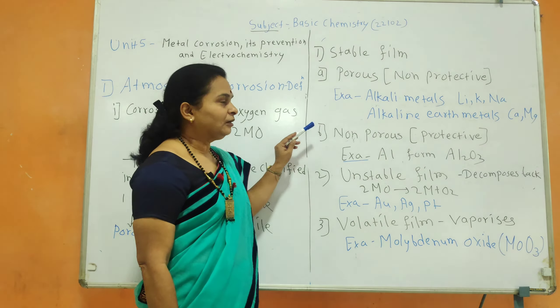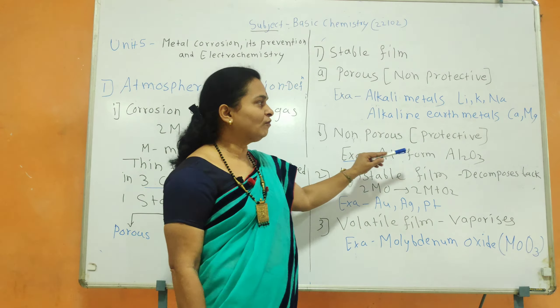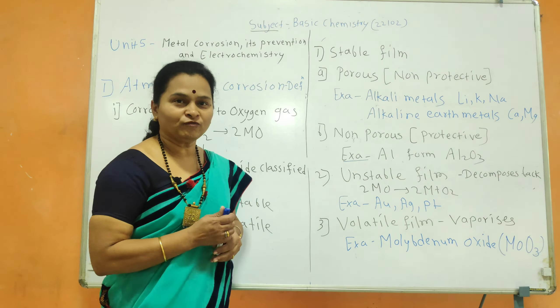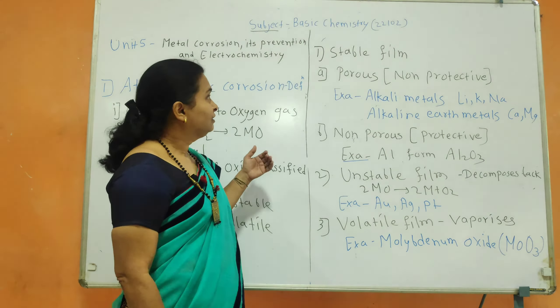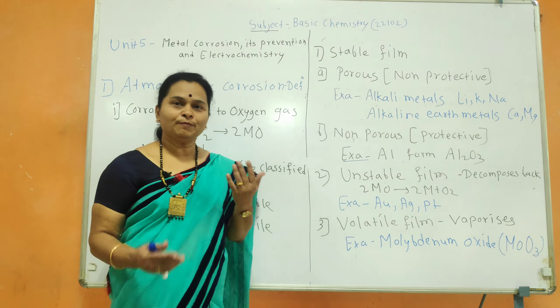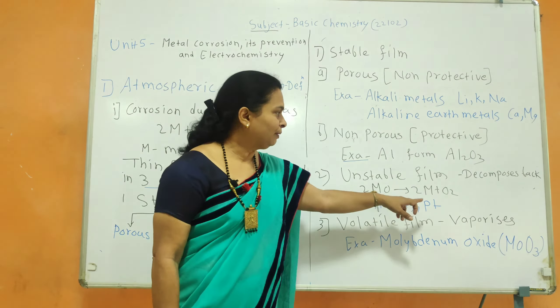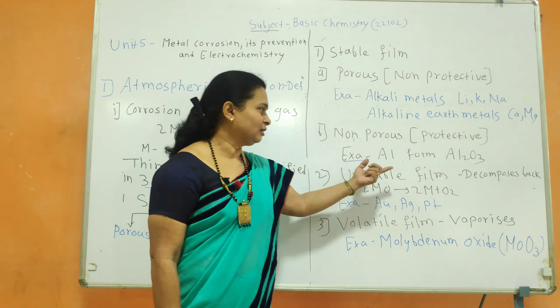Non-porous film is a protective stable film. For example, in the case of aluminum, there is formation of aluminum oxide as a non-porous film, which protects the metal from further corrosion. The second type of film is unstable film, which decomposes back as soon as it is formed; therefore the reaction is reversible. Examples are gold, silver, and platinum, in which the film formed is an unstable film.